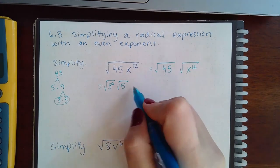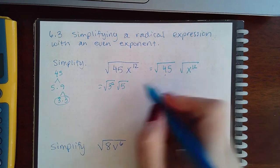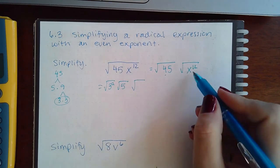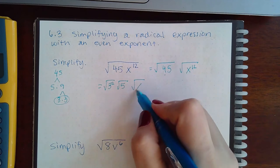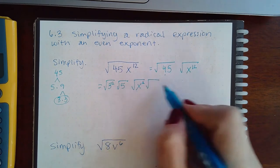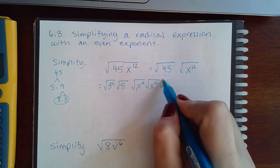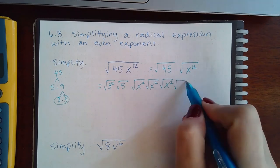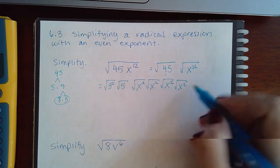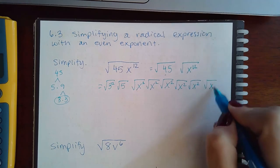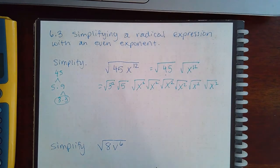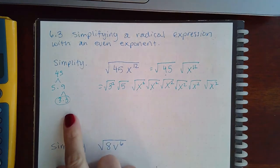And then for x to the 12th power, I can actually simplify that into x to the second power, because I need a pair. X to the second power, x to the second power, 1, 2, 3, 4, 5, and 6. So I group them in pairs just like I did with the numbers.